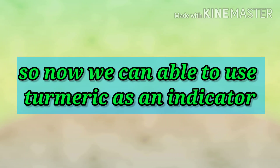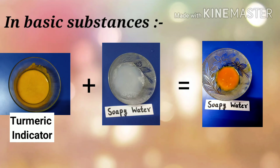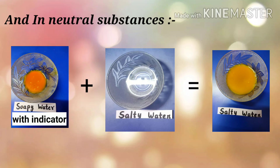Now we are able to use turmeric as an indicator. To summarize: when we mix turmeric indicator with a basic substance, its color turns red. For an acidic substance, when we mix a mixture of turmeric indicator and basic substance into it, its color turns yellow. For a neutral substance, when we mix the same mixture in, its color turns orange.